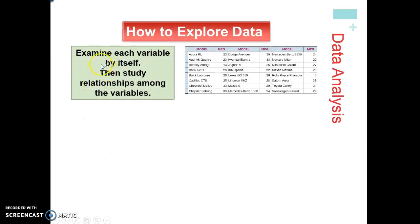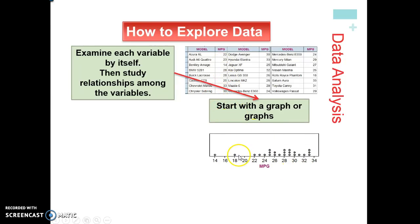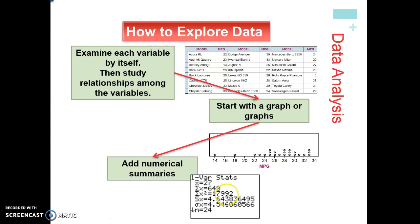When exploring data, we first examine each variable by itself, then study the relationships among different variables. We usually start by making a graph because that gives us a quick visual representation of the data, and then we do numerical summaries — what is the mean, what is the standard deviation, how many data points did we have. We'll be going over what all these symbols mean on your graphing calculator later on.